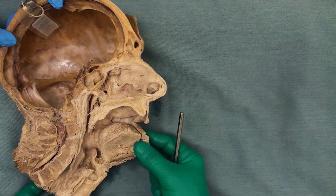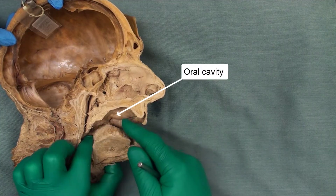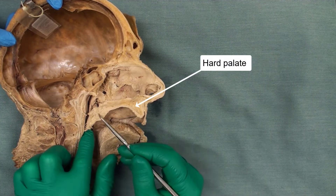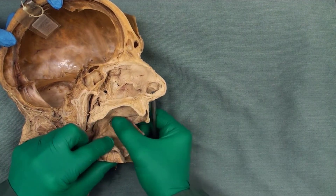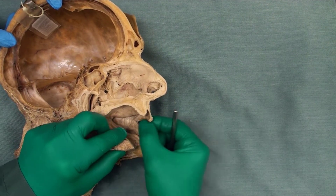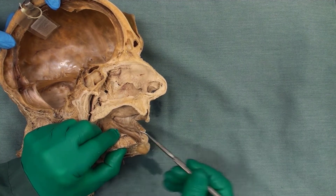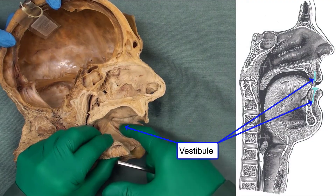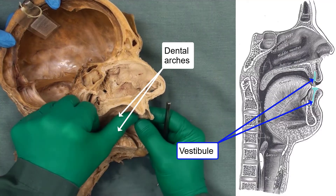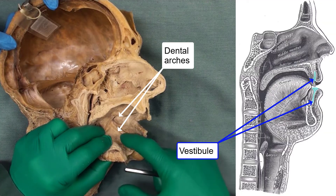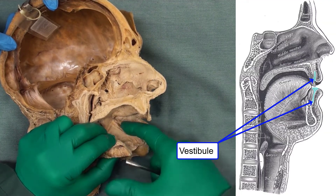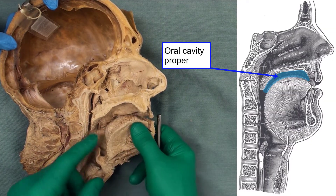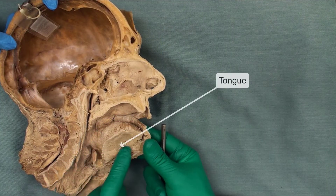Let's go through the anatomy of the oral cavity. The oral cavity is right under the nasal cavity. The roof of the oral cavity is made by the hard palate here and the soft palate on the back. On the lateral side we have the cheek — the buccinator area. Anteriorly it is bounded by the oral fissure and the cheek on the sides. The oral cavity is divided into two regions: the vestibule, which is between the dental arches and the cheek; and the oral cavity proper, which is right behind the dental arches. The floor of the oral cavity is mostly occupied by the tongue and its musculature.